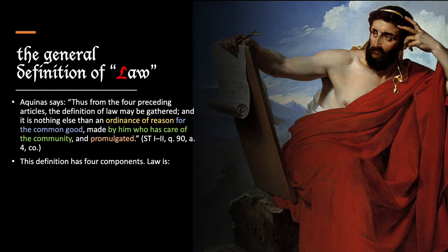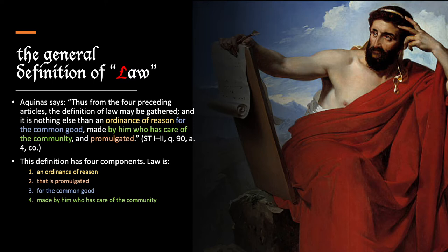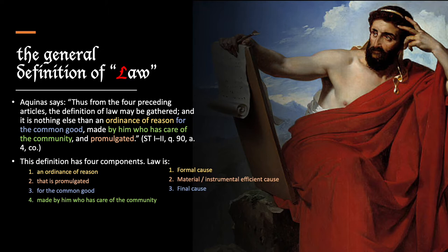So this is the definition of law and it has four components. Law is: number one, an ordinance of reason; two, it is something that is promulgated; three, it is for the common good; and finally, it is made by him who has care of the community. The first of these aspects corresponds to the formal cause of law. The second corresponds to the material or instrumental efficient cause of law. The third corresponds to the final cause of law — that is, the purpose of law. The fourth corresponds to the efficient cause of law.